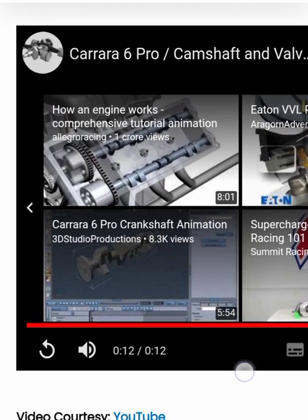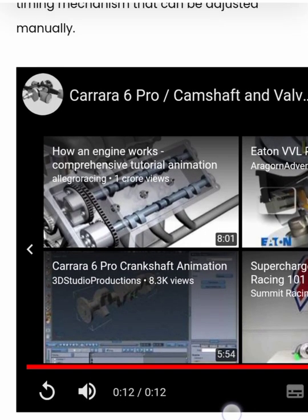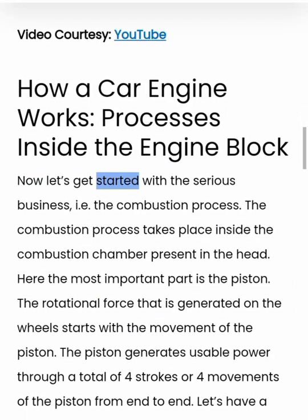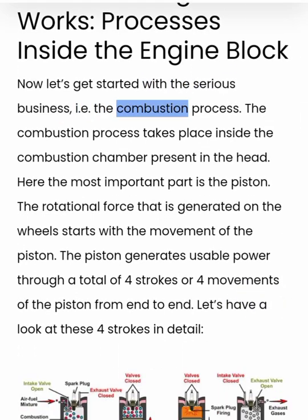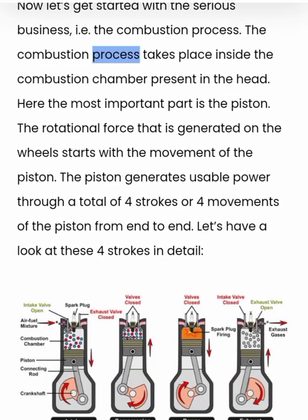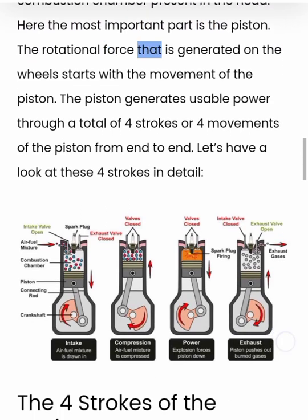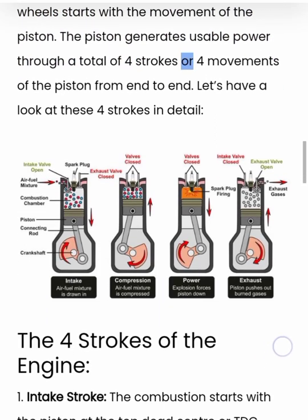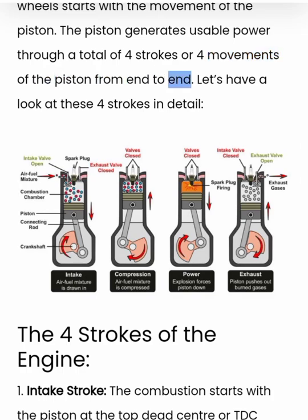Processes inside the engine block: now let's get started with the serious business — the combustion process. The combustion process takes place inside the combustion chamber present in the head. Here the most important part is the piston. The rotational force that is generated on the wheel starts with the movement of the piston. The piston generates usable power through a total of four strokes, or four movements of the piston from end to end.